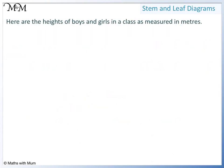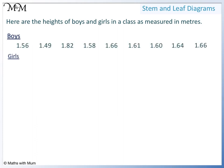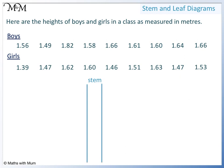Here is another example showing the heights of boys and girls in a class. We start with a stem. We need to look at both boys and girls and find the smallest value — we have 1.39. We always write all digits except the last digit in our stem, so we write 1.3 but not the 9. We now look for the largest value: we have 1.82, so we write 1.8 but not the 2 in the stem. We count up from 1.3 to 1.8.